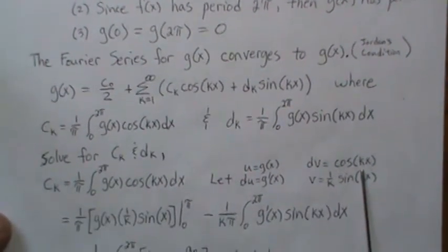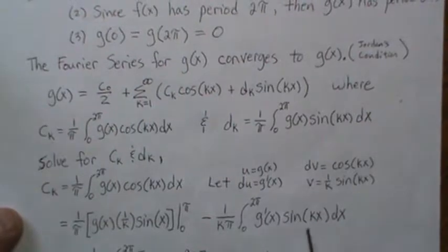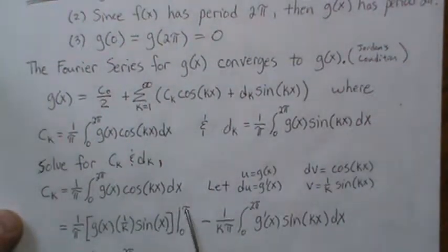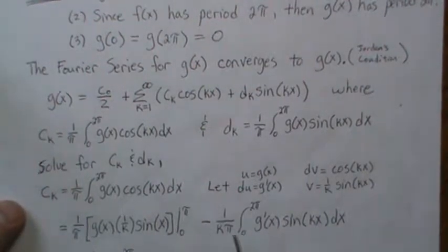And then we plug those into this function, or to the product, the formula. And notice that the sine of π and the sine of zero is zero. So this goes away, this piece, and we're left with this.